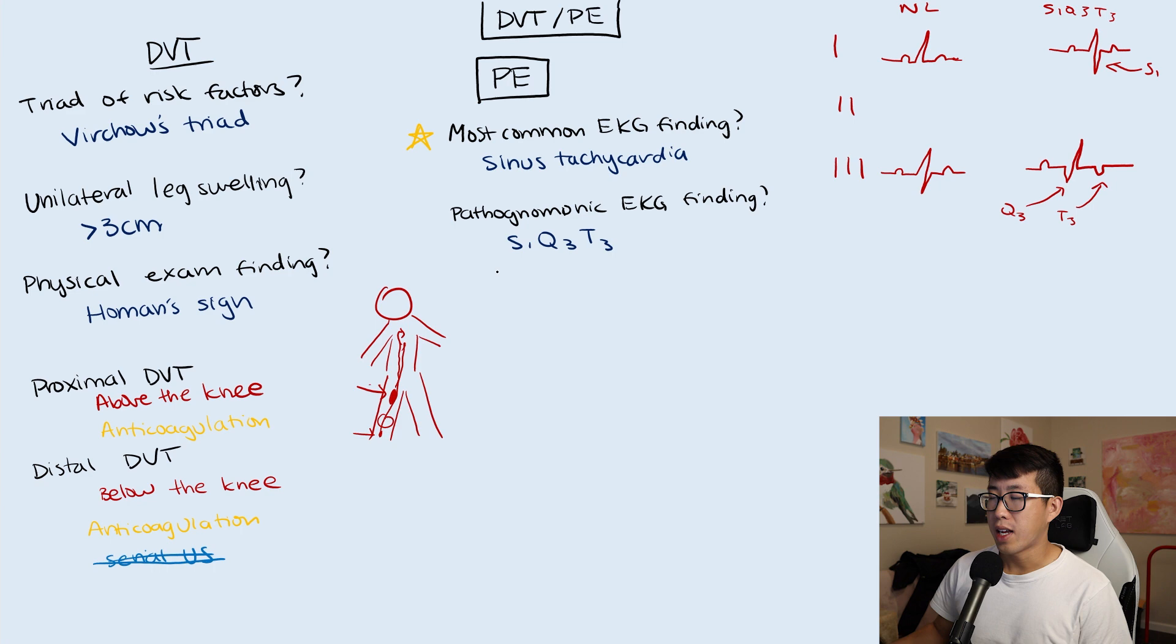Next question: what is a score to help rule out PE? The answer is the PERC score or the PE rule out criteria. It's kind of in the name, but this is what you're going to use a lot of times in the emergency department to say this patient has a PERC score of zero, so we can say with 98-99% certainty that this patient does not have a PE.